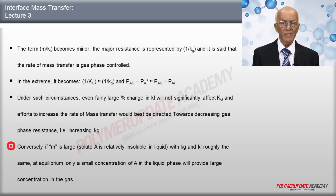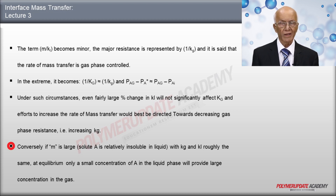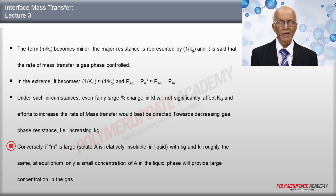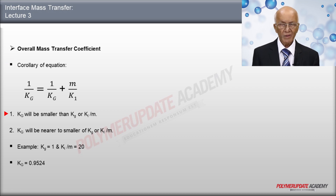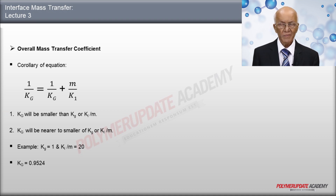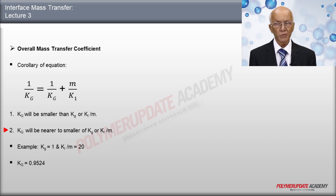Conversely, if M is large — that is, solute A is relatively insoluble in the liquid — with kg and kL roughly the same, at equilibrium only a small concentration of A in the liquid phase provides a large concentration in the gas phase. From the equation 1 over capital Kg equals 1 over small kg plus M over small kL: (1) Kg will be smaller than kg by a factor of M, and (2) Kg will be smaller than kL by M.